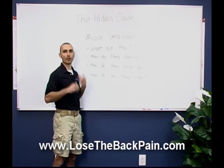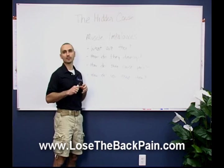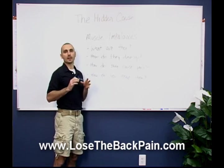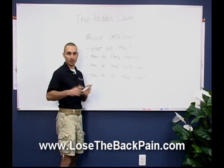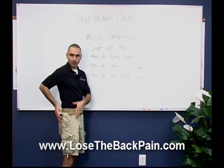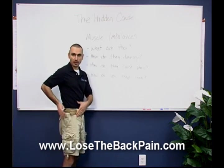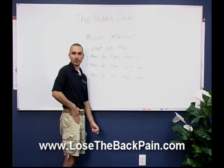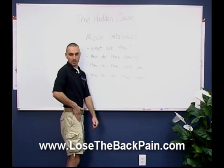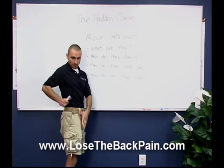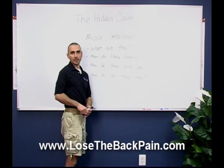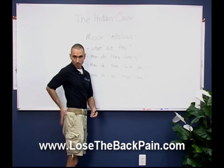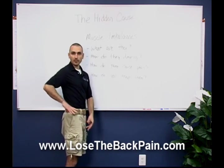So what are muscle imbalances? Muscle imbalances are an imbalance between one or two muscle groups. An example would be the muscles here in the front of the hip — your hip flexor muscles — in relation to the gluteal muscles. If these hip flexor muscles are stronger and tighter in relation to the glutes, you have an imbalance.